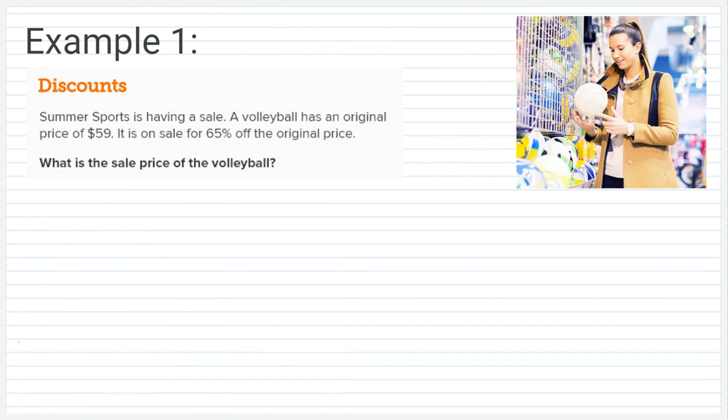Alright, example one. This one says summer sports is having a sale. A volleyball has an original price of $59. It is on sale for 65% off the original price. What is the sale price of the volleyball? Just like previous videos, I have shown you how to solve these types of percent problems in one step or two steps, and we can do the same thing with discounts.